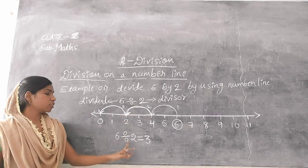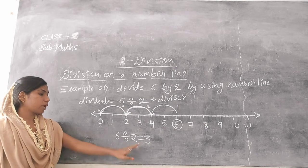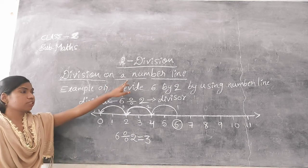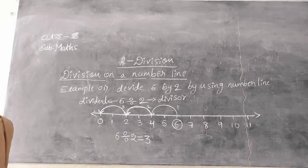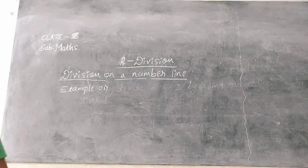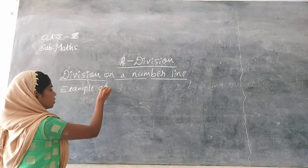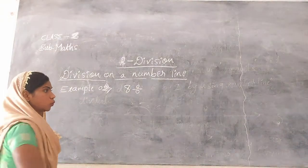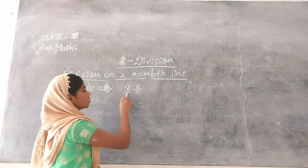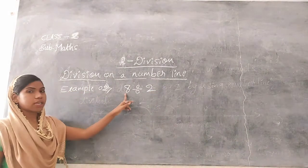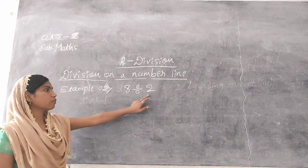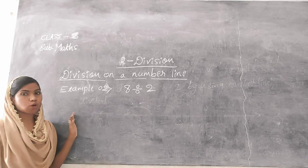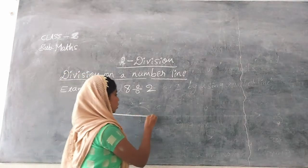So this is how we can divide by using a number line. Let's take one more example. Example number 2: divide 8 by 2, or 8 divided by 2. So how can we divide 8 by 2 using a number line? First, draw a number line.